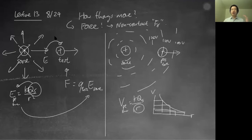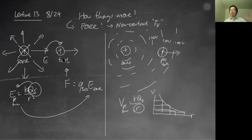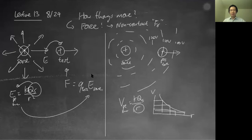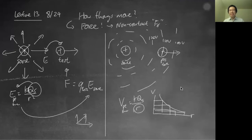This is how all non-contact forces work. Gravity works the same way — the Earth creates a gravitational field, and the Moon experiences that field; that's why the Moon orbits the Earth. The Sun doesn't magically tug on the Earth with an invisible line — it's mediated through a gravitational field or gravitational potential. Why do we invent something more abstract to explain something simple? Because by inventing this abstraction, it actually answers more questions than we asked.